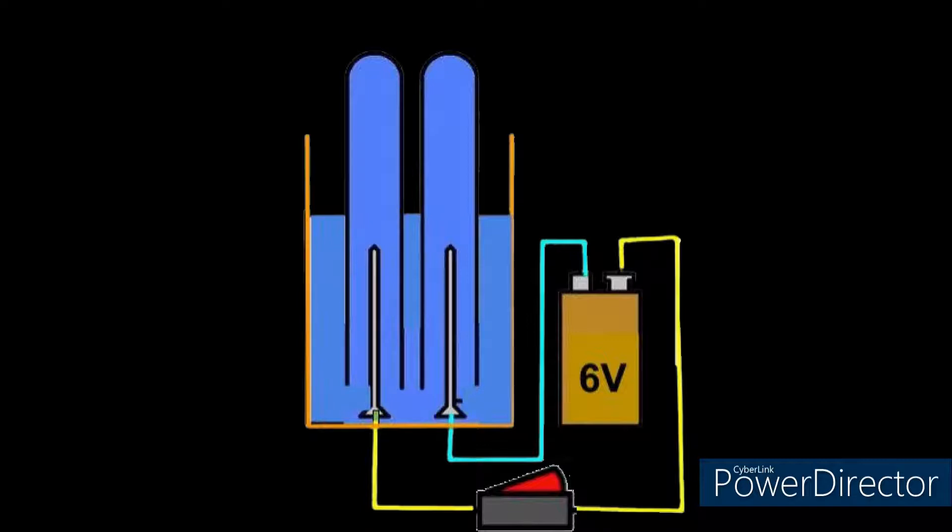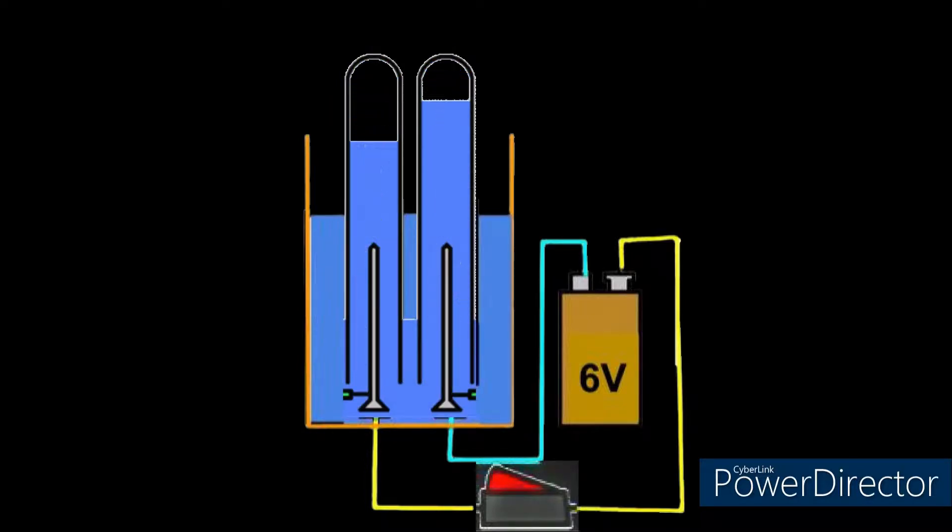Add a few drops of sulfuric acid to acidify the water. Sulfuric acid helps to increase the speed of the reaction. Take two test tubes filled with water and invert them over the electrodes. Switch on the current and let it be undisturbed for a few minutes. As the current flows, bubbles come out from both electrodes.